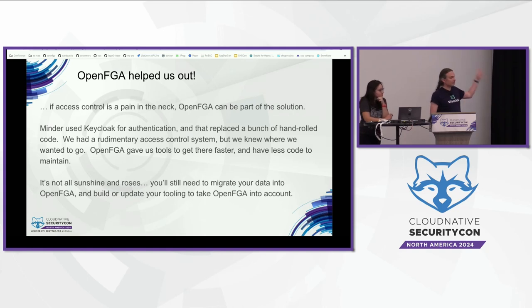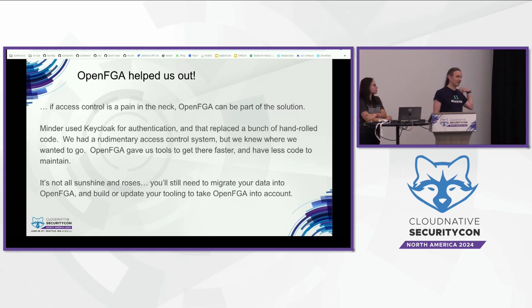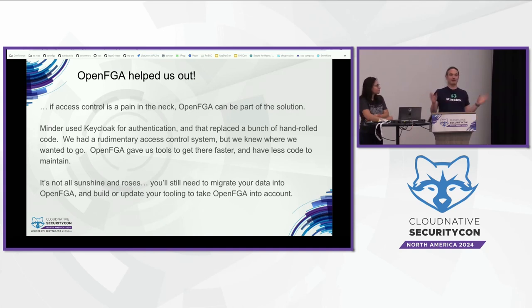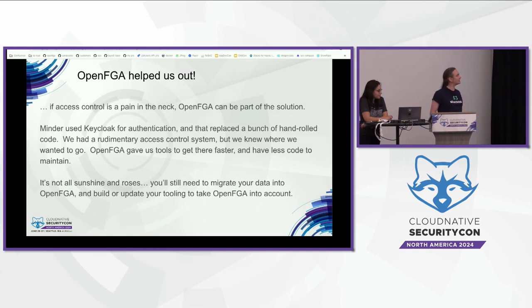Our stack: we wrote some OAuth code to begin with, replaced it with KeyCloak — happy with that. We wrote an access control system ourselves, replaced it with OpenFGA — happy with that. There's a dream that someday we could replace everything with services that do stuff well, but I suspect we'll probably have a core of stuff unique to us. It saves you some work, doesn't save everything — saves you some work, moves the problem around on the plate. Still have to eat your peas sometime.